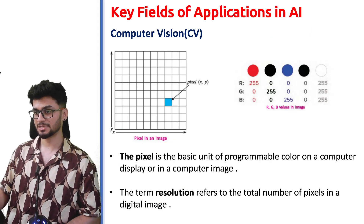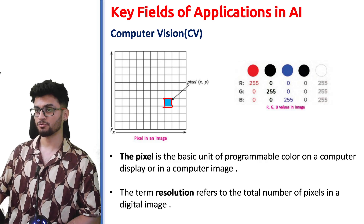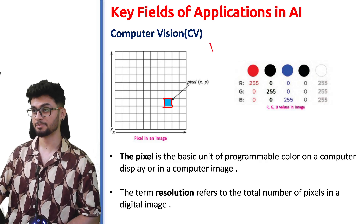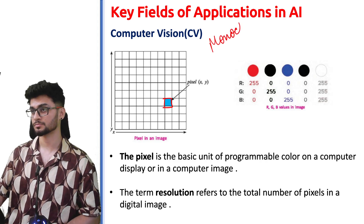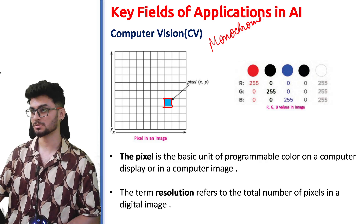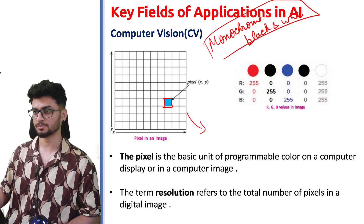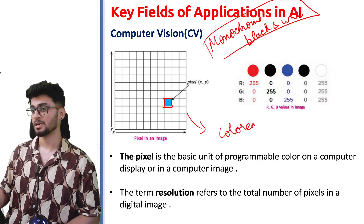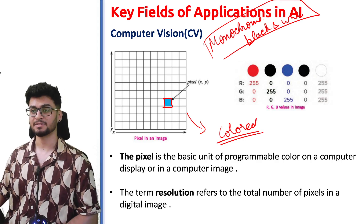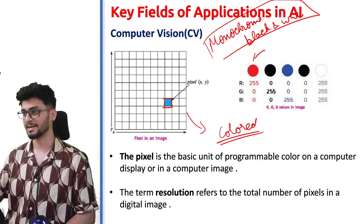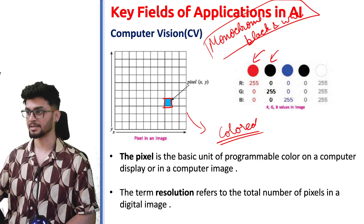You don't need to memorize the exact values, but understand that every pixel has a value — for example, R=43 means the red color value is 43 at that pixel. For monitor resolution 1280×1024, multiplying gives the total number of pixels. When we talk about a 5-megapixel camera, megapixel means one million pixels. An iPhone 14 with 48 megapixels can take an image with 48 million pixels, and eventually the quality of the picture automatically increases.